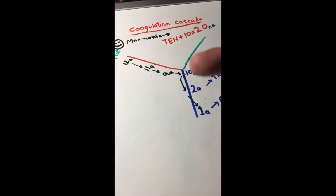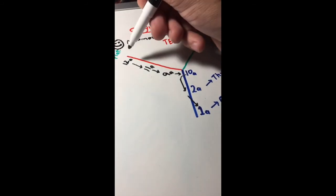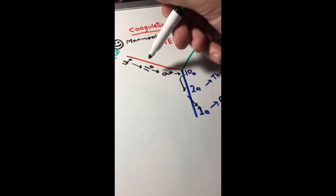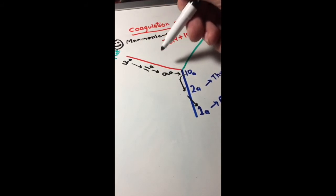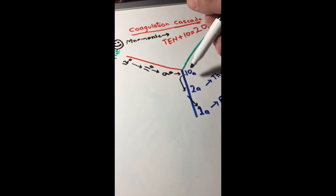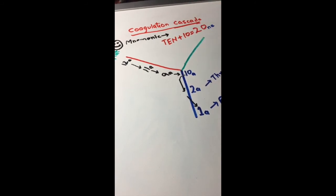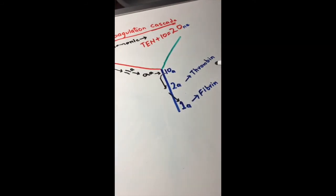I just simplified it and put their activated form so it won't get that complicated. 12a helps to convert 11 into 11a, likewise 9a, 10a, 2a and 1a. 2a is also called thrombin and 1a is fibrin.